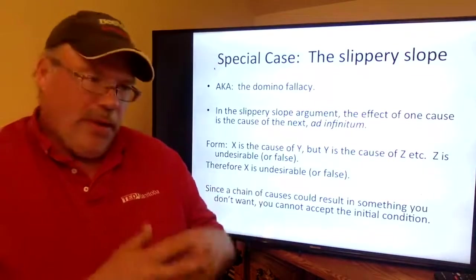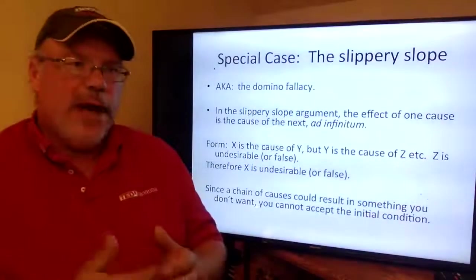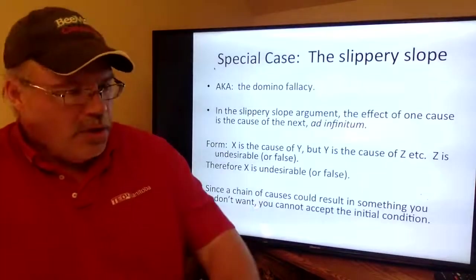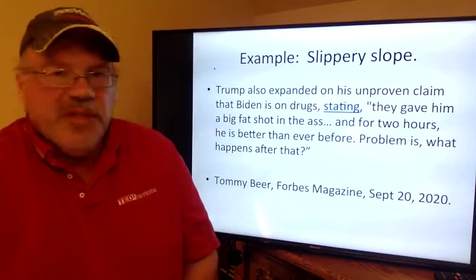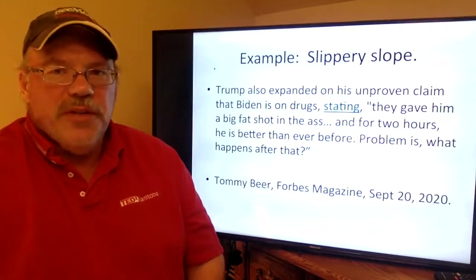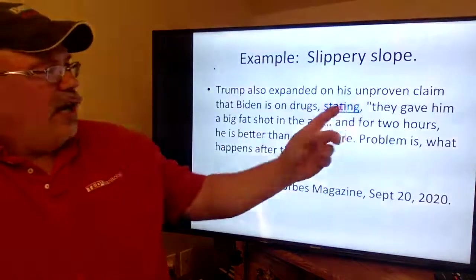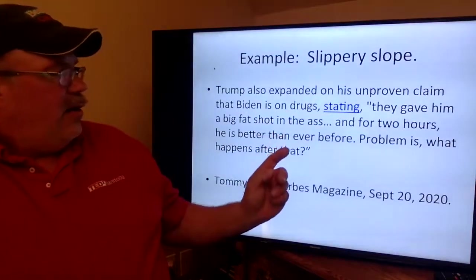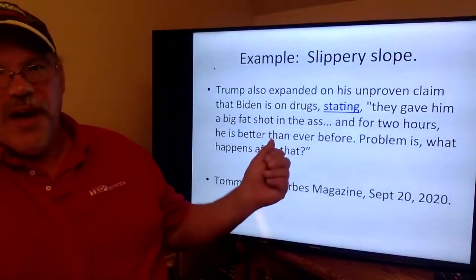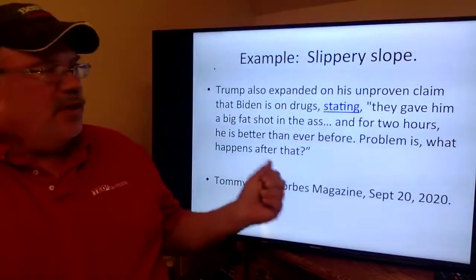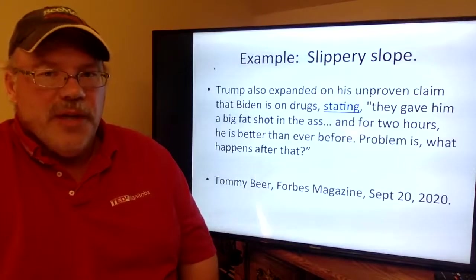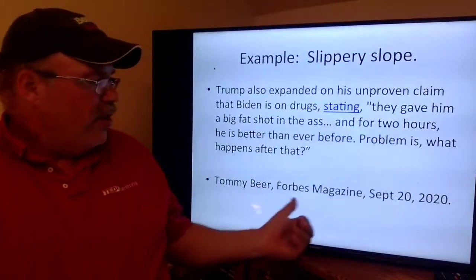The slippery slope argument goes: we don't want that inevitable result, so we must not grant even one minor change. Here's an example from just a couple days ago — Trump is trying to insinuate that Joe Biden is on drugs. That's an insinuation of a slippery slope: once you accept that Joe Biden might be on drugs, then some further consequence follows. He's being vague about what the insinuation is. That's quoted by a columnist named Tommy Beer in Forbes magazine.